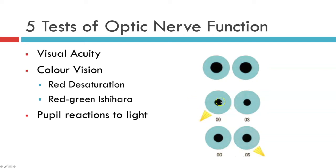So if you shine a light on the normal right eye, both pupils will constrict tightly. However, if you shine the light on a poorly functioning left optic nerve, both pupils will constrict by a smaller amount and therefore relatively speaking they will be seen to dilate when you shine a light from the right to the left eye.